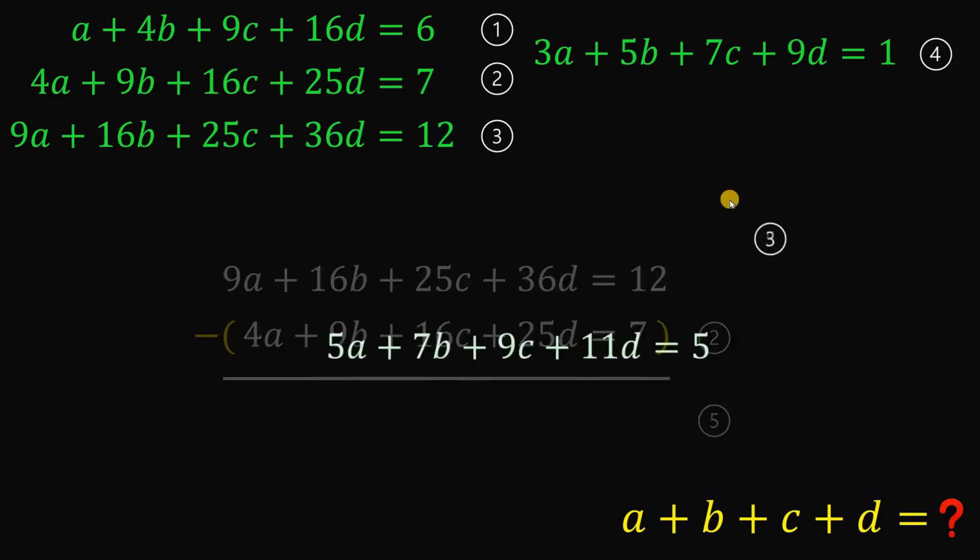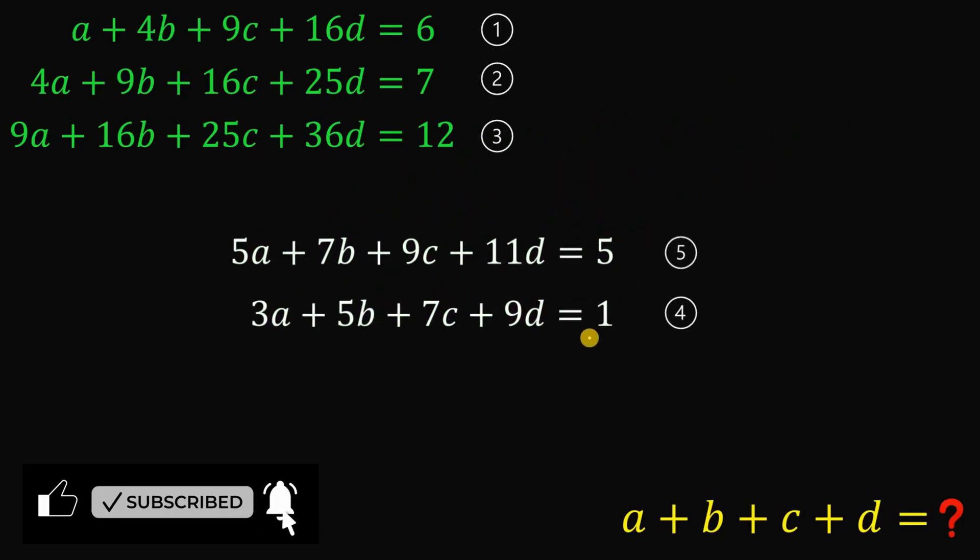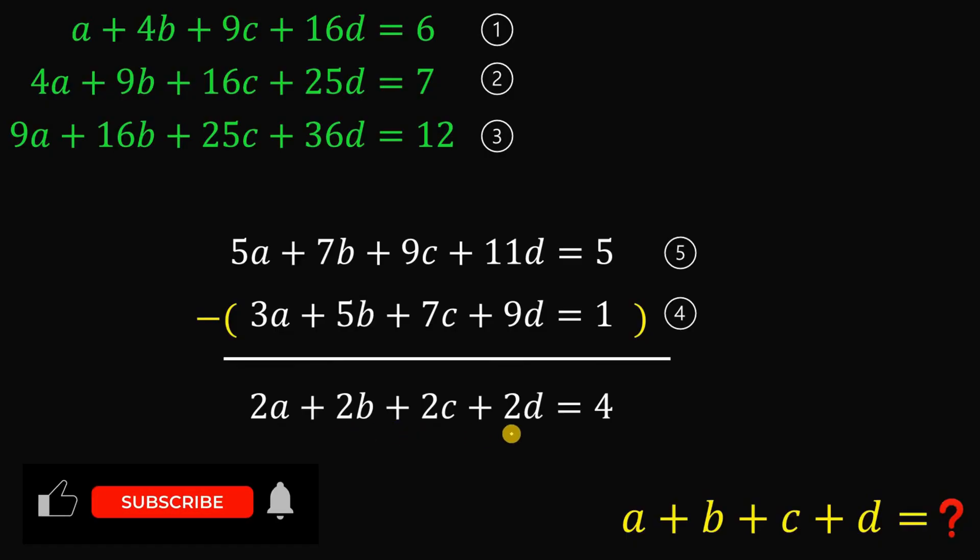Now let's set aside this result. Finally, let's get equation 4 and equation 5. Let's subtract equation 4 from equation 5. We see that we get 2a plus 2b plus 2c plus 2d equals 4.